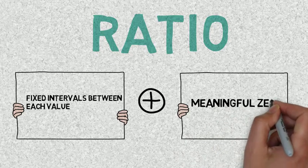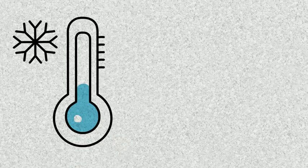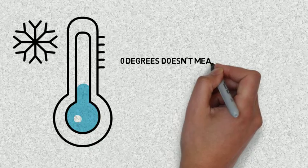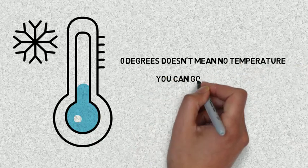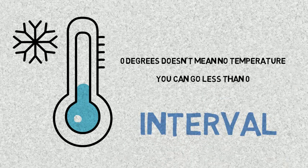And I'll illustrate this just using the example of temperature. So with temperature, you can have a temperature of zero degrees, but zero degrees doesn't mean there's no temperature because you can, in fact, go lower than that. So temperature is not actually ratio data. Temperature is actually interval level data.